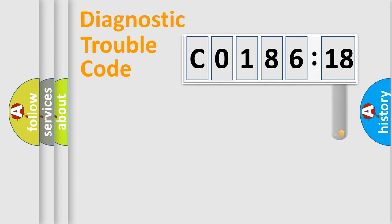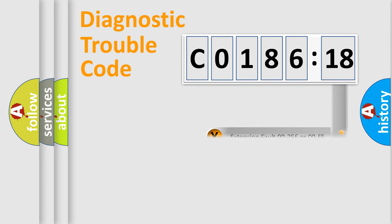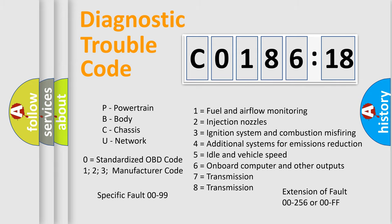The add-on to the error code serves to specify the status in more detail — for example, a short to the ground. Let's not forget that such a division is valid only if the second character code is expressed by the number 0.